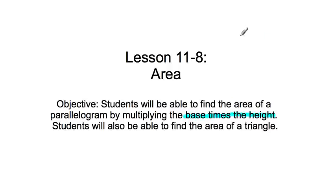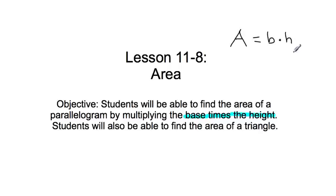When we write a formula for that, it would be area equals whatever the base is of a parallelogram times — that little dot means multiply — times the height. If we can identify the base and the height of a parallelogram, we're going to be fine finding the area.